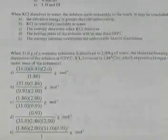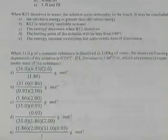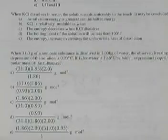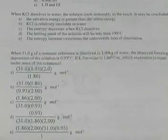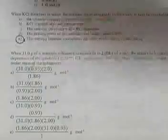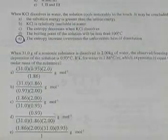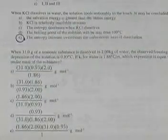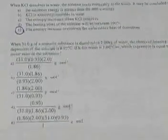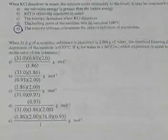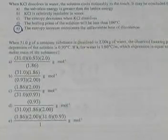Number 37: KCl dissolves in water but the container is cold to the touch. This means the only reason it dissolves is because the entropy increase overcomes the unfavorable heat of dissolution. Normally solutions want to form when heat is released, but here entropy is the driving force.